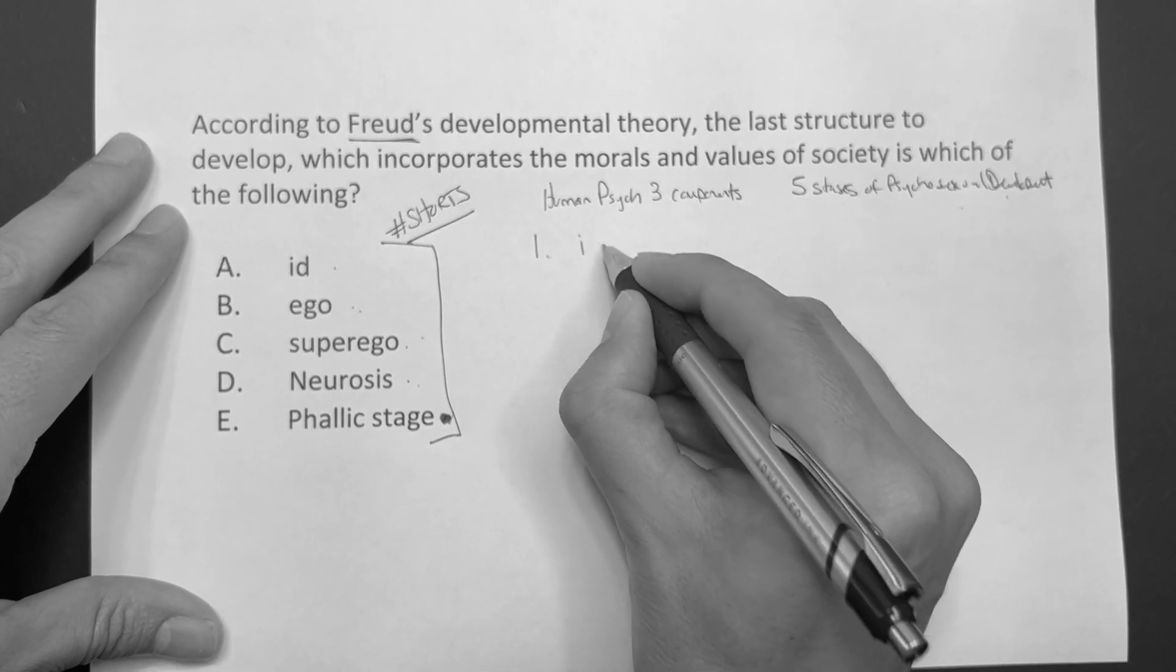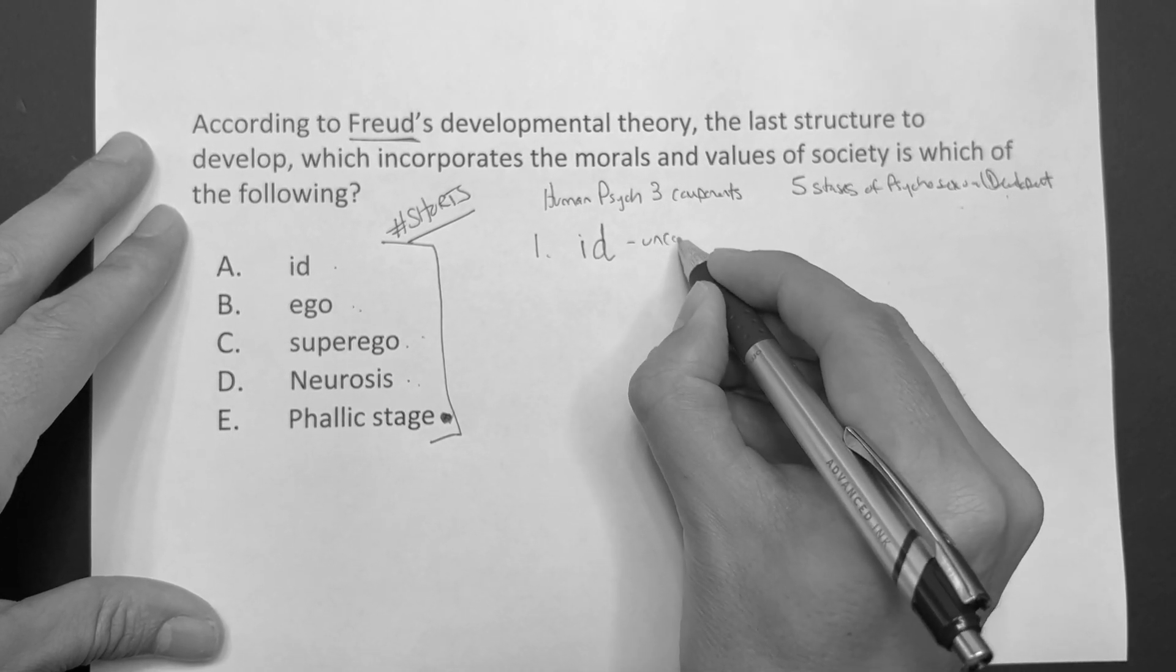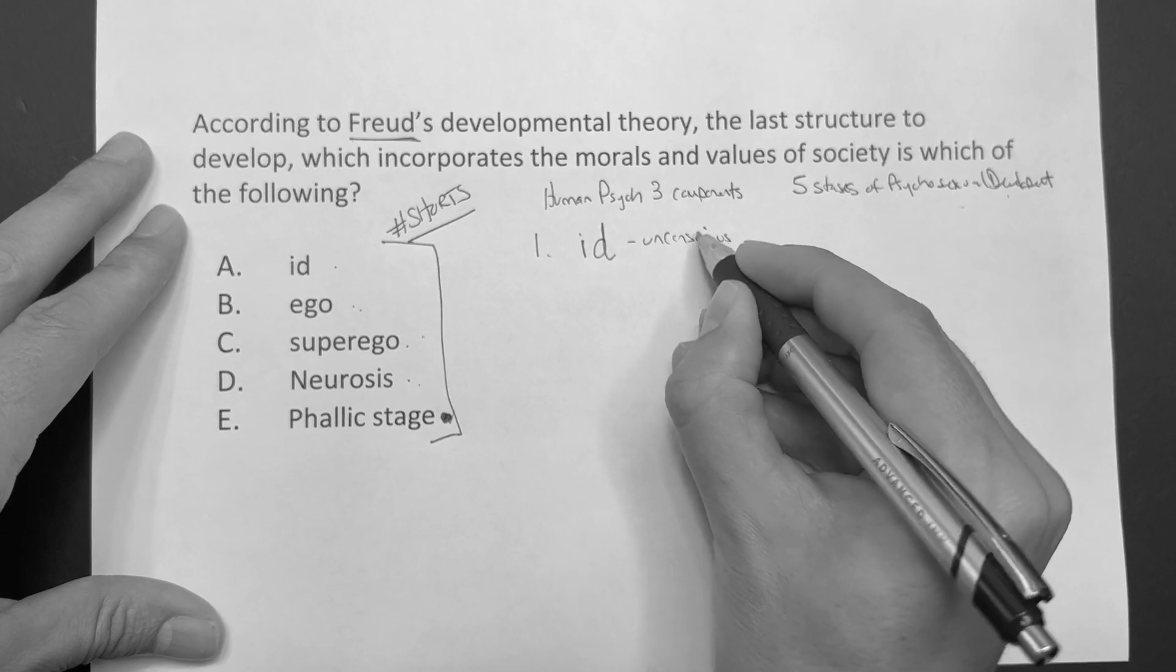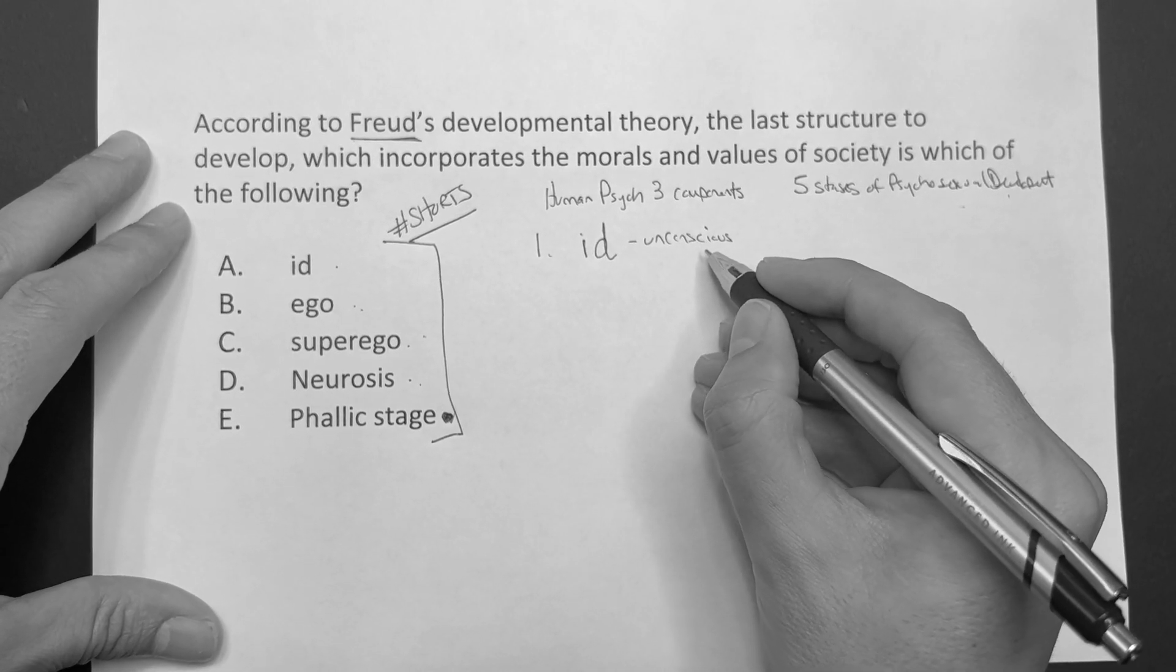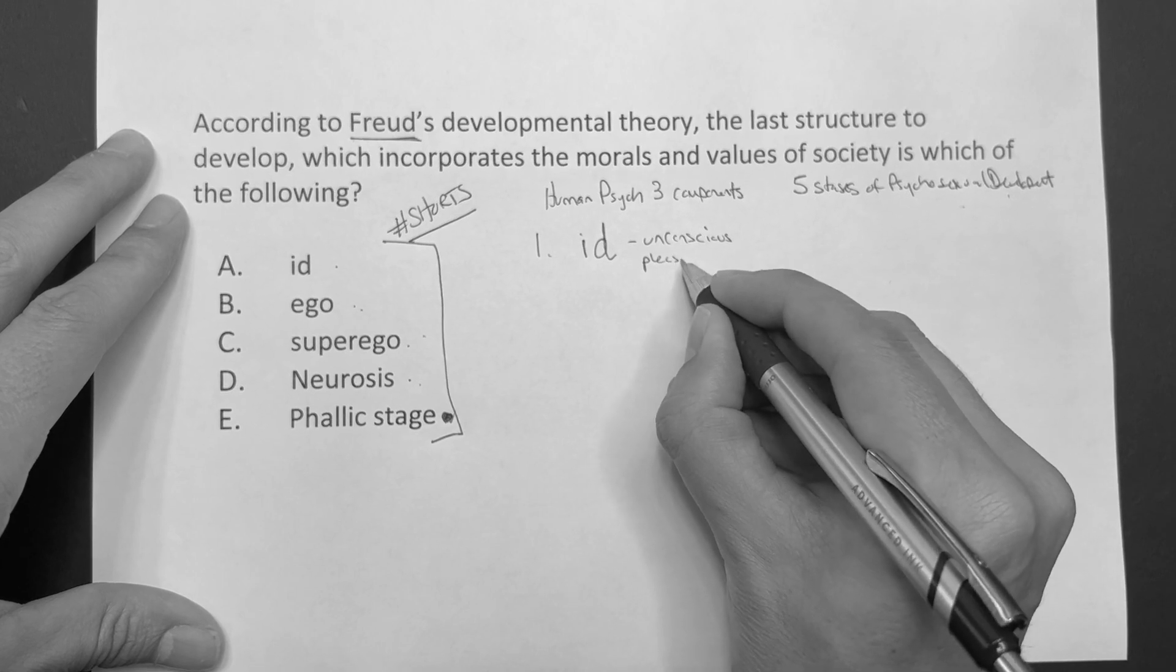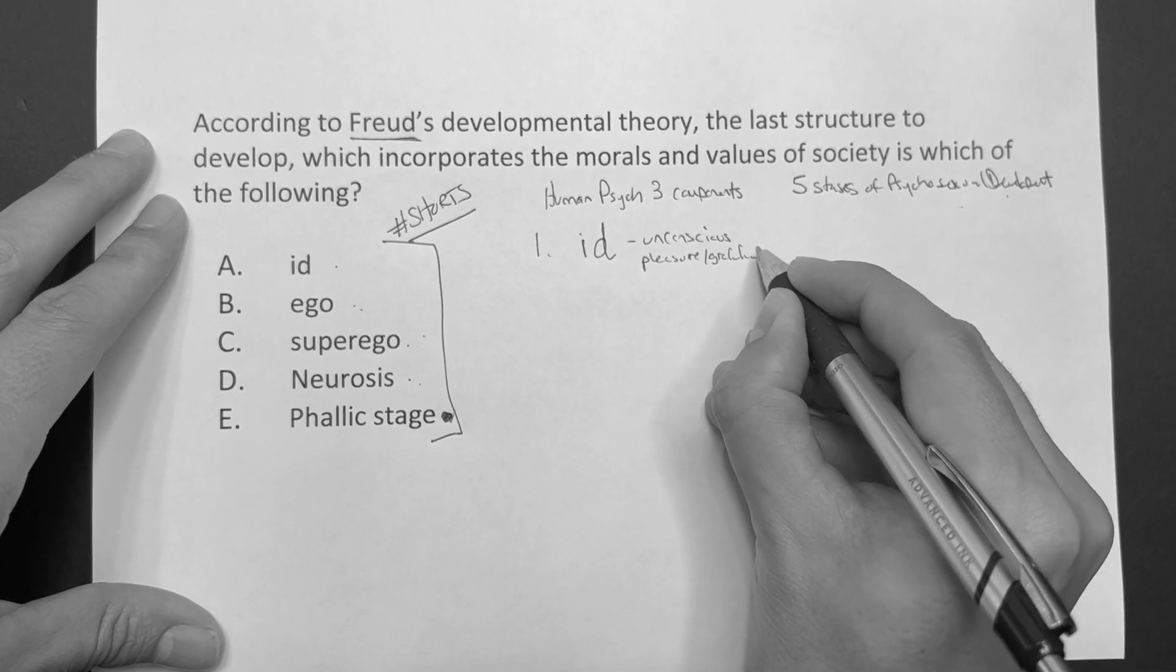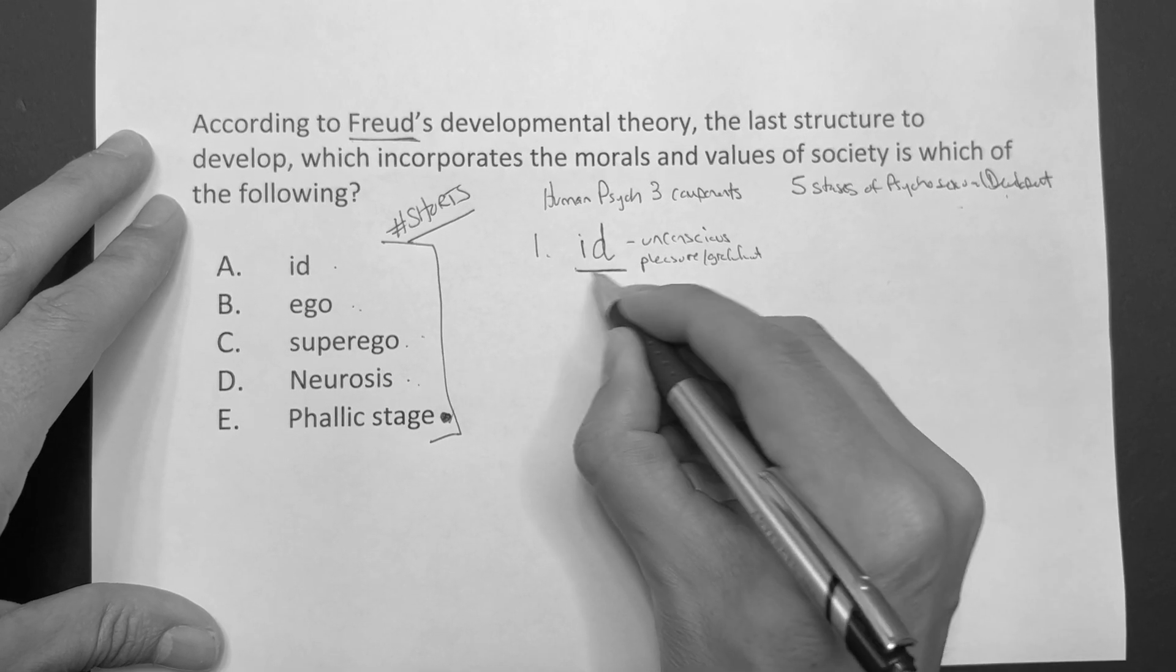The human psyche has three components. We know it as the id. Now the id, this is gonna be the unconscious, and this is mainly from birth. It develops at birth, it's our desires, it's our impulses, and it seeks pleasure. It seeks pleasure and gratification, right? That's the whole deal with the id.